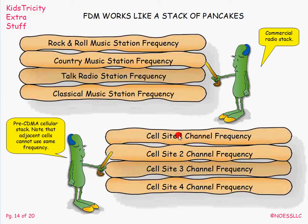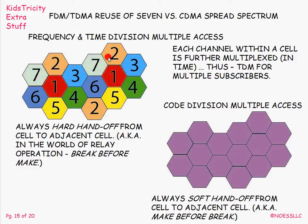In the pre-CDMA frequency-stacked system, when you moved from one cell to another — like from little beehive cell one to beehive cell two — you had to move to a different pancake. You had to let go of pancake number two and grab pancake number seven. This resulted in what's known as a hard handoff. Those of you who used older systems know that when you moved from one cell to the next, you often got a click as your cellular radio transferred from one frequency to the next.